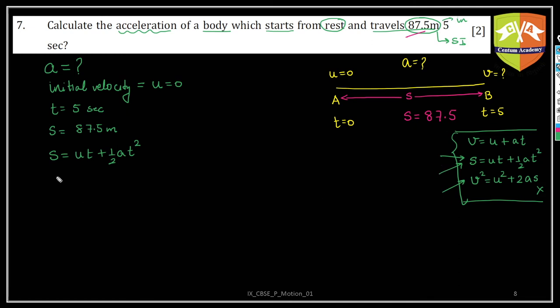Now it is fair enough, very simple. 87.5 - before you deploy the values, I usually suggest that you simplify the equation itself. u is zero, so hence this is half a t square. u is zero, so this term is zero.